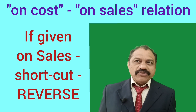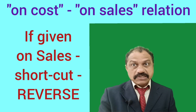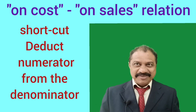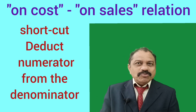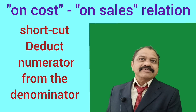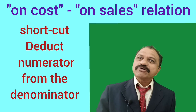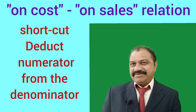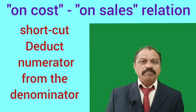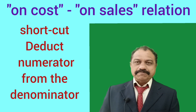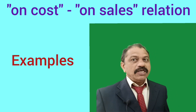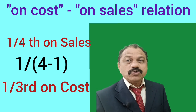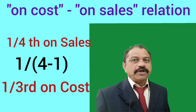Similarly, if the rate of profit is given as a fraction on sales, the process should be reversed. Deduct the numerator from the denominator and put the result as the denominator of the new rate on cost; the numerator remains unchanged. Example 1: 1/4 on sales equals 1 by (4−1) on cost, that is 1/3 on cost.